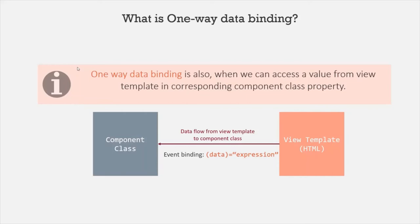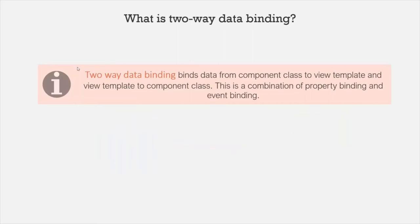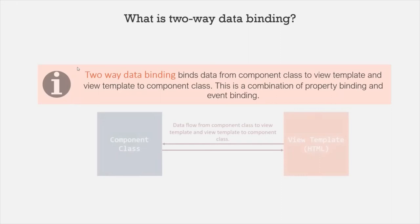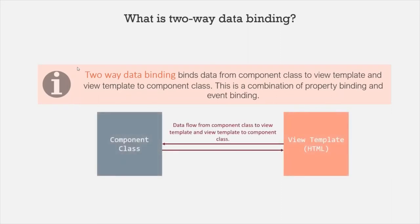Remember that in case of one-way data binding the data flows only in one direction — either from the component class to its corresponding view template, or from the view template to its corresponding component class. We also have two-way data binding. Two-way data binding binds data from the component class to the view template and from the view template to the component class, so it is a combination of property binding and event binding.